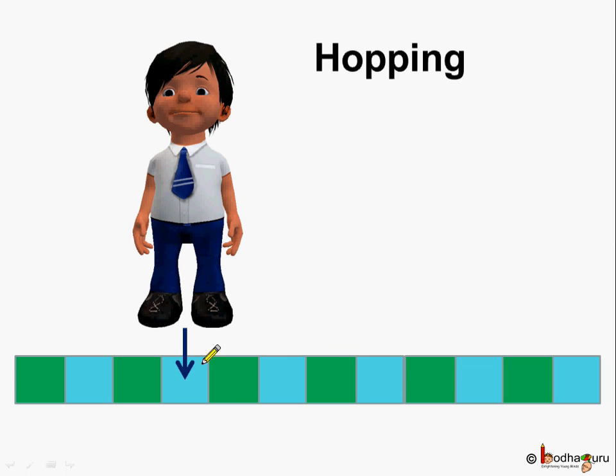First Aman hopped till what square? Let's count it 1, 2, 3, 4. So Aman hopped till the square number 4.